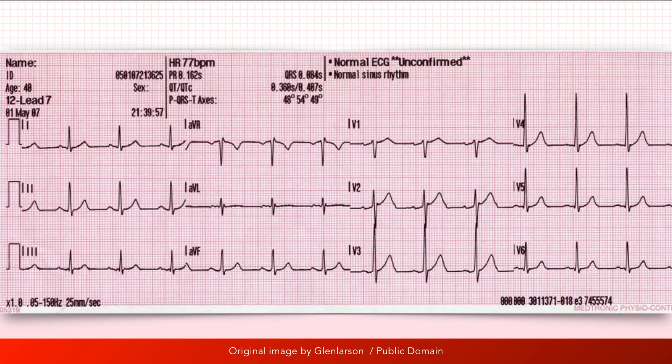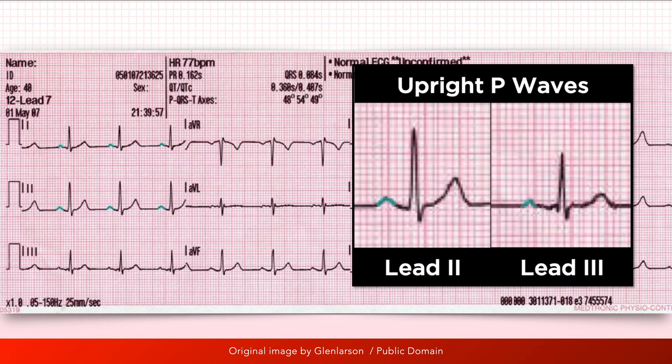With a normal sinus rhythm, a QRS complex follows every single P wave, and a P wave precedes every single QRS complex. Although that may sound obvious, the two statements are not equivalent, nor does one automatically entail the other. Another defining feature of sinus rhythm is P waves that are upright in leads 2 and 3, and have a normal wave morphology that remains constant.